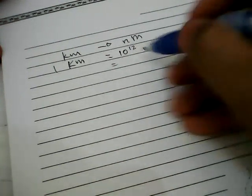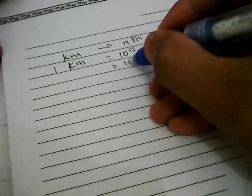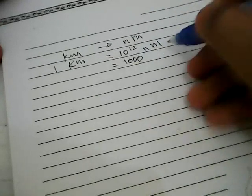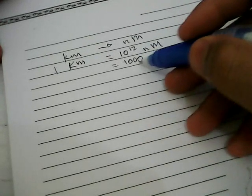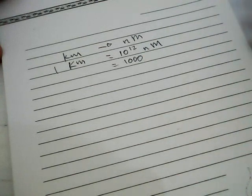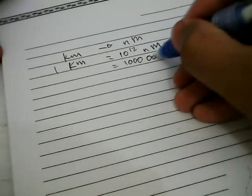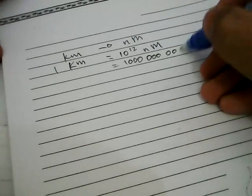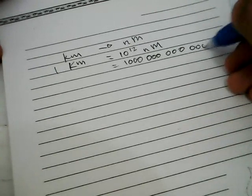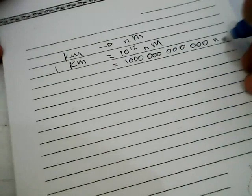So it's the same like you write 1 with 12 zeros: 1,000,000,000,000 nanometers.